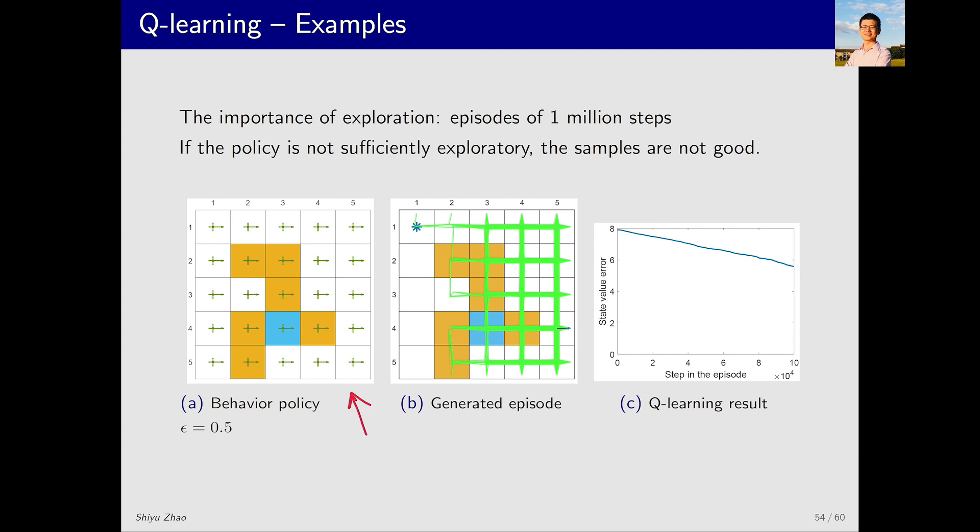Suppose we use a policy where epsilon equals 0.5, but there is a significantly higher probability of moving right at each state. Clearly, its exploratory ability is not as good as before. With a million steps, many state action pairs have not even been visited. If we use such data for Q-Learning, you will see that the policy obtained in the end is still quite far from the optimal policy.